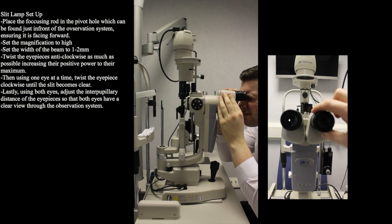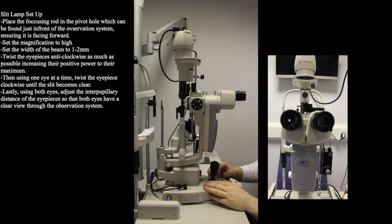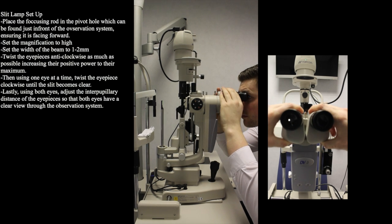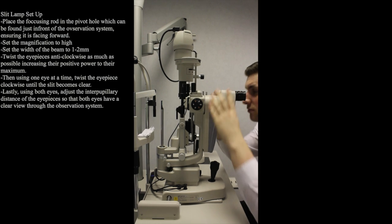If you overturn the eyepiece the image won't become blurred but it will force us to accommodate which may lead to fatigue and inaccuracy. Lastly using both eyes adjust the interpupillary distance of the eyepieces so that both eyes have a clear view through the observation system.